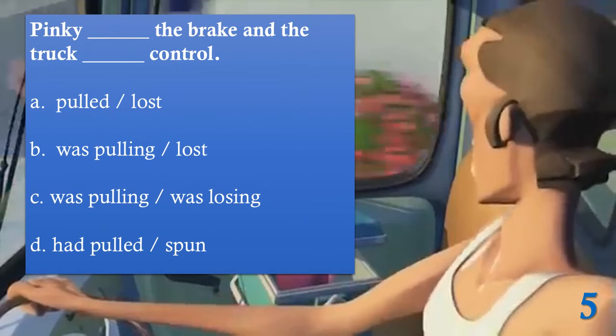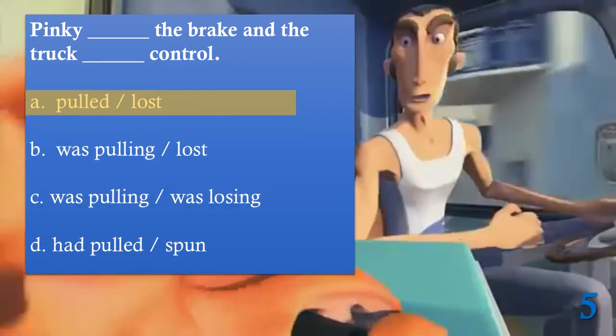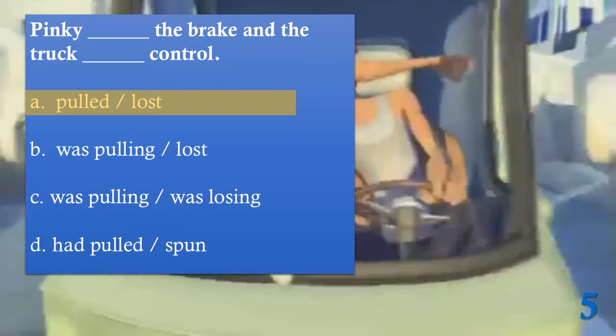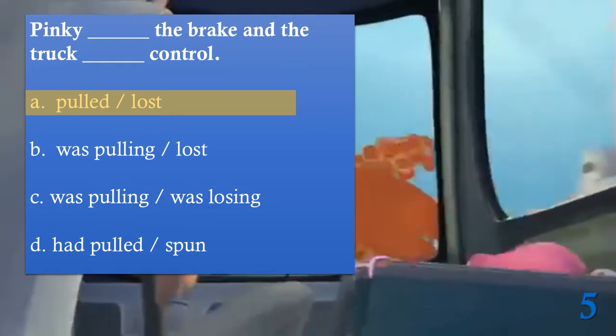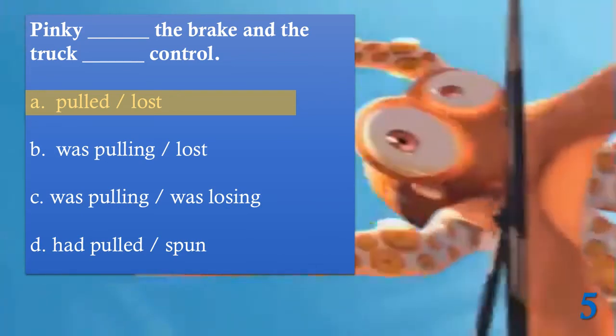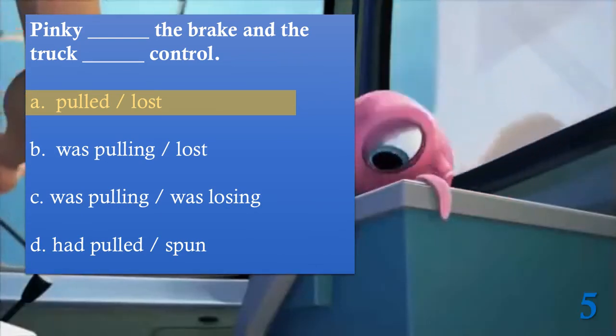What happened next? He hit the brake and the truck lost control — a series of actions all happening in the past. There is no interruption; they are a series of actions in the past simple.